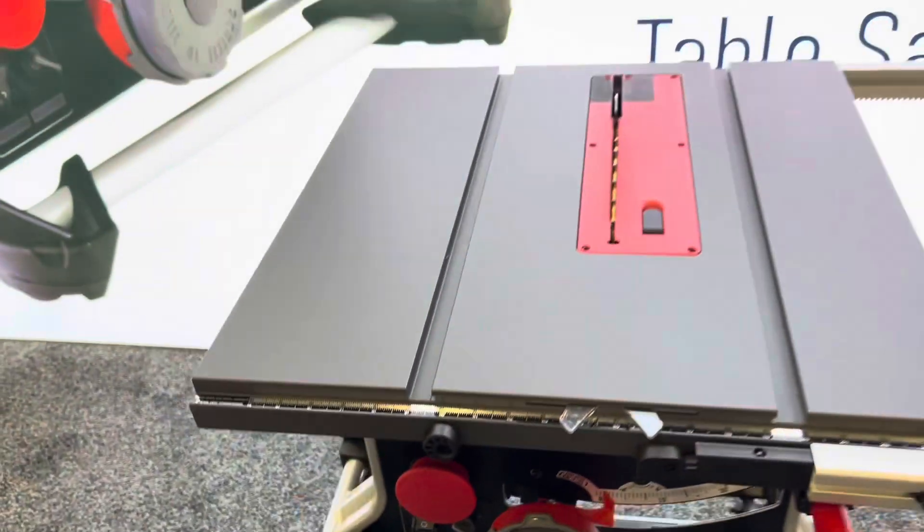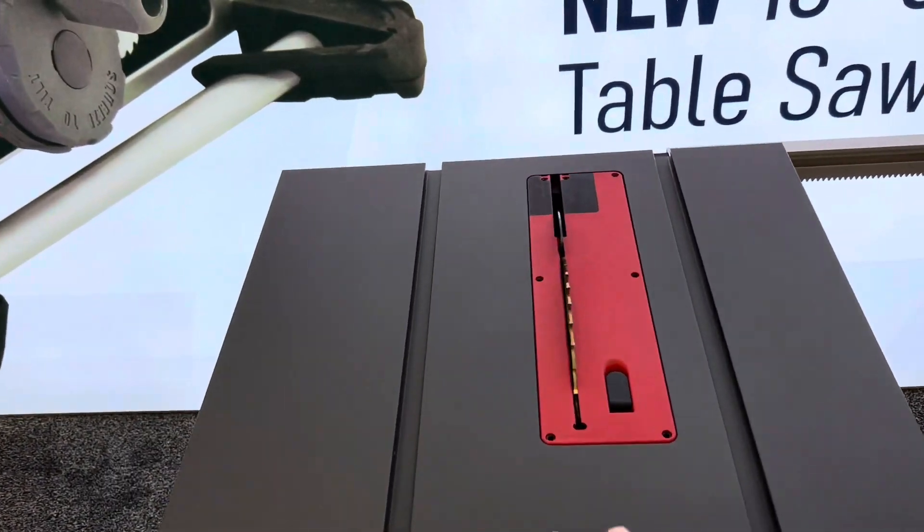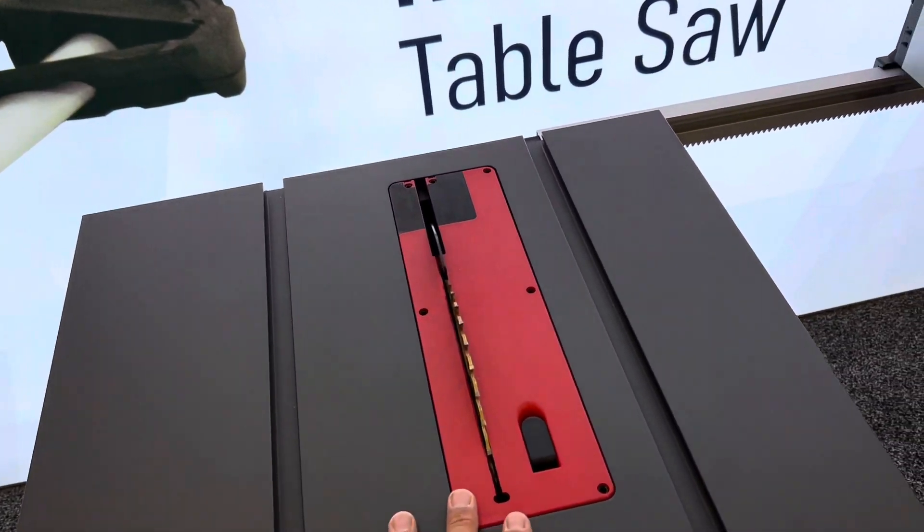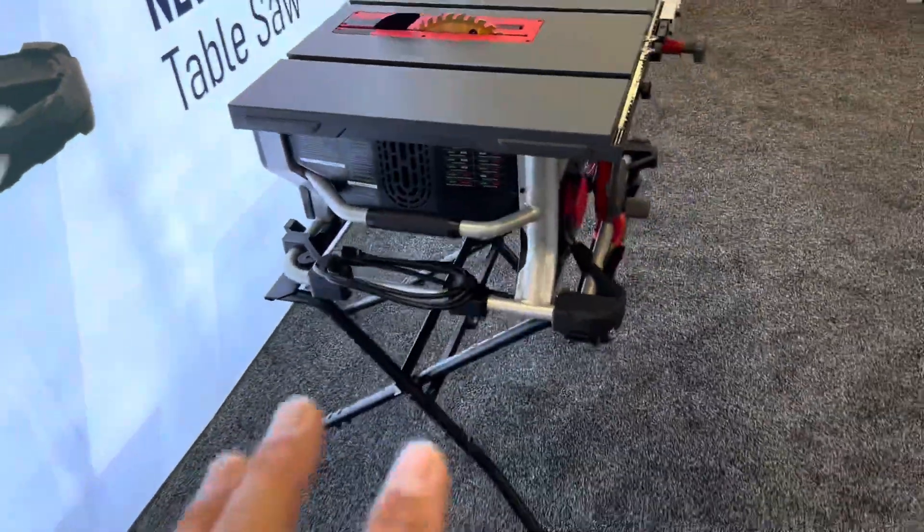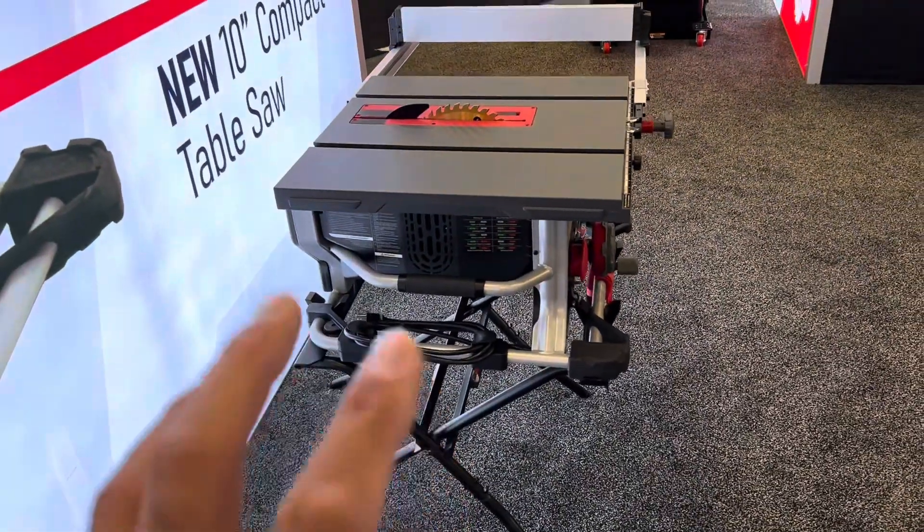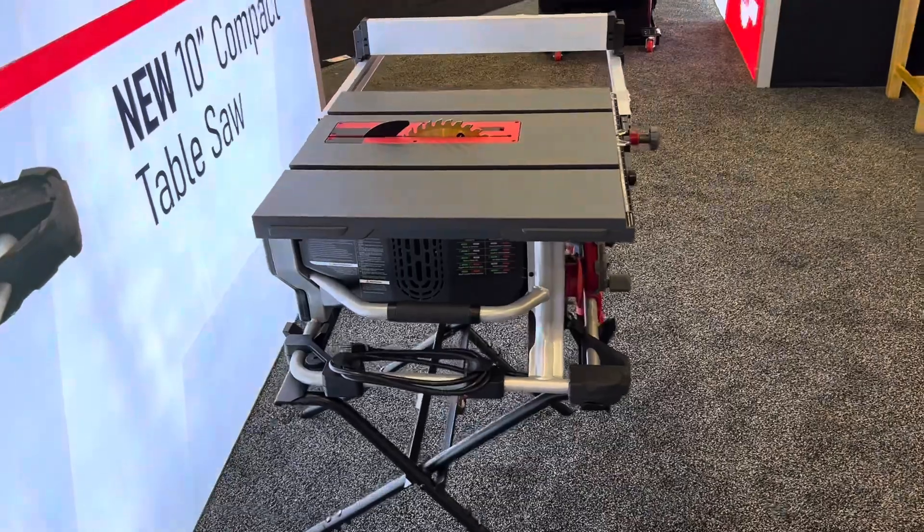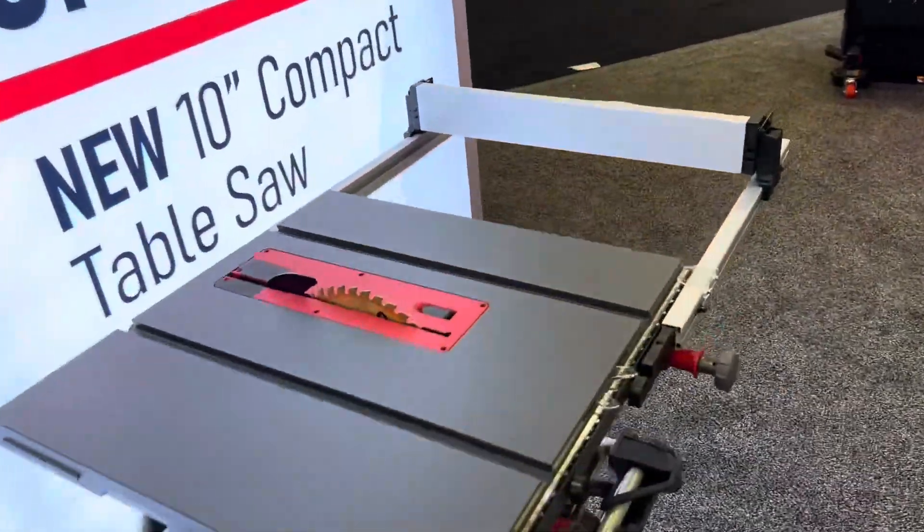So I think the only thing he said is you can't put a dado set on it, but overall a really nice saw. I think this would be great in our installation vans because it's just lighter and more compact than the bigger job site saw.